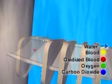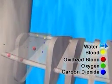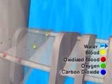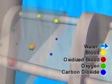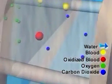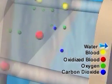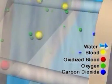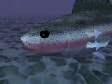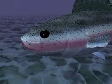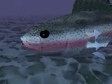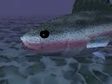Blood flowing through the lamellae takes oxygen from the water and releases carbon dioxide into the water. After the fish receives its oxygen, the water passes out through the gill openings and the breathing process begins again.